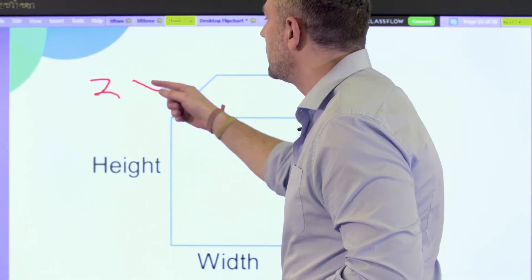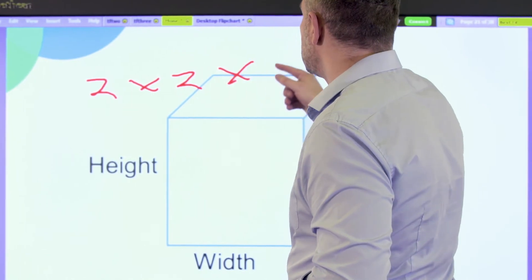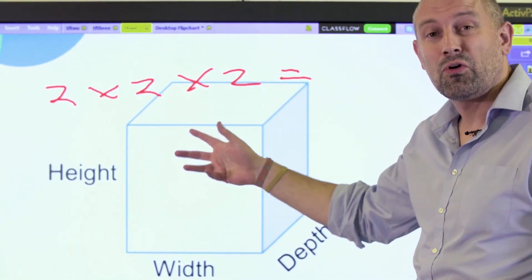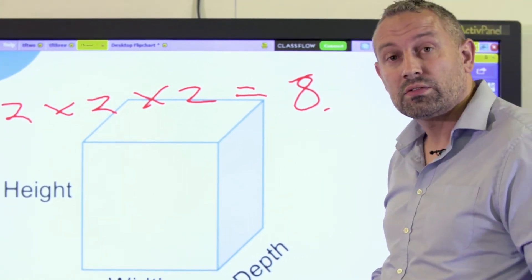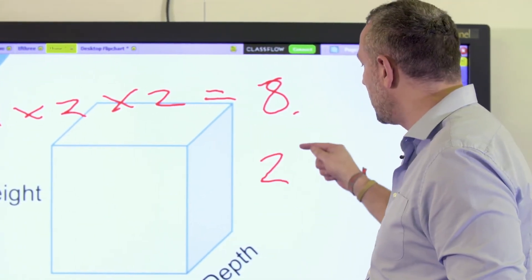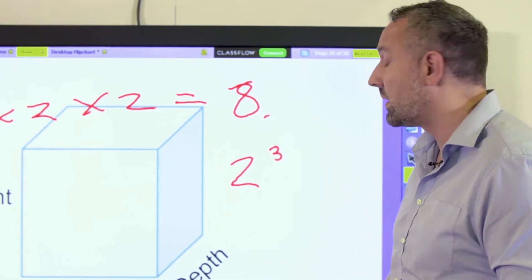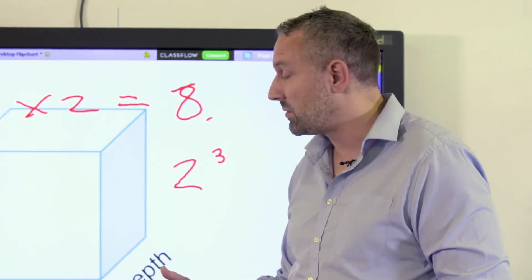So 2 times 2 times 2 equals—2 times 2 is 4, times 2 is 8. We could also write that like this: 2 and a small 3, which is 2 times 2 times 2.